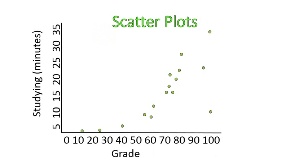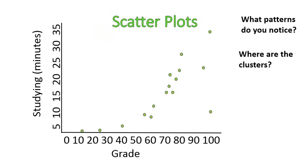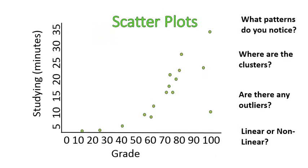We look at scatter plots and ask ourselves certain questions — we try to analyze what we see in this scatter plot. What are some of the conclusions you come to? Are there any patterns that you notice? Where are the clusters? Are there any outliers? And is it linear or non-linear? These are four questions I'm going to ask with every scatter plot that we look at.